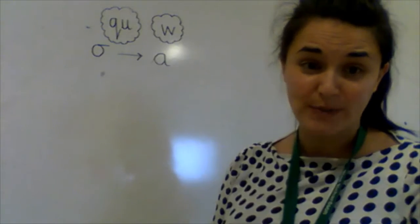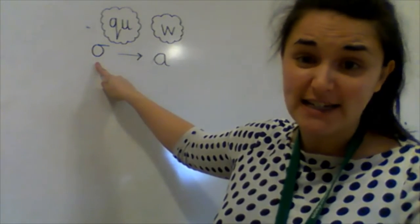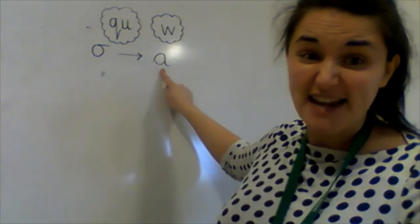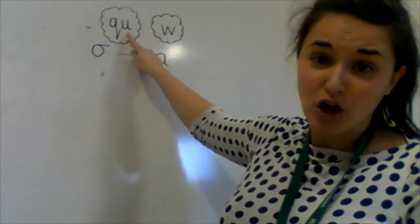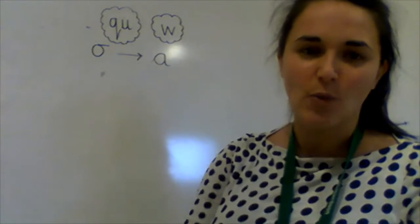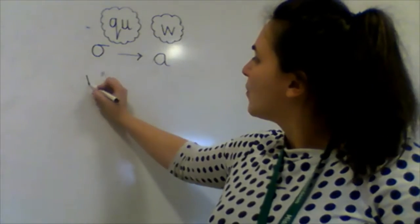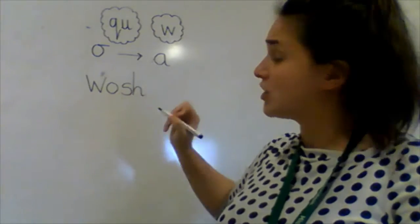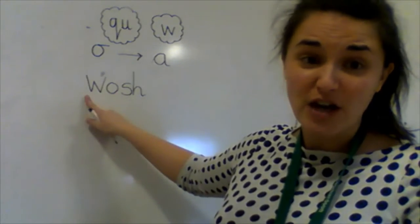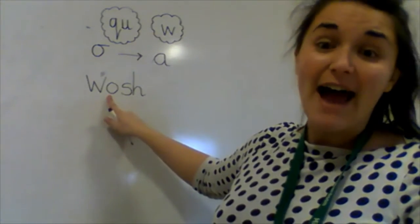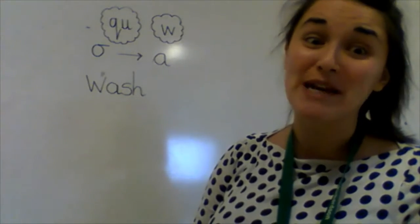We're going to look at a new spelling rule today. The spelling rule is that you will hear an 'aw' sound in the word, but we don't write it as an 'aw' — we have to write the sound as an 'a'. And we do this if it comes after a 'qu' sound or a 'w' sound. If I wanted to write the word 'wash' — I needed to wash my clothes — it sounds like 'wosh', but if you can hear the 'aw' sound after a 'w', I can't write it as an 'aw'. I have to write it as an 'a'. So it would be written w-a-s-h, but we say it as 'wash'.